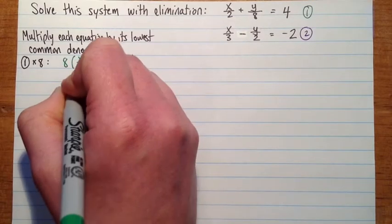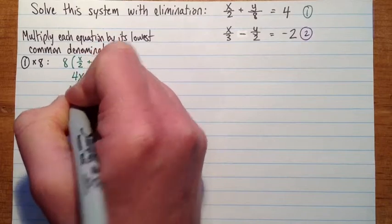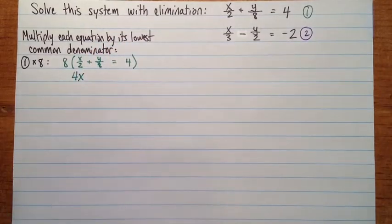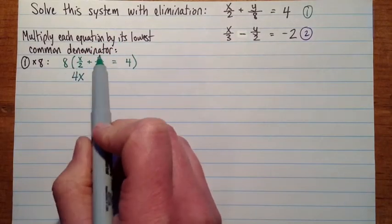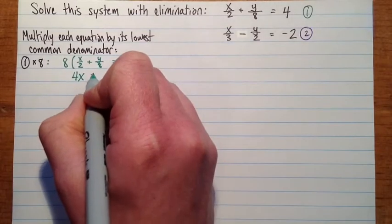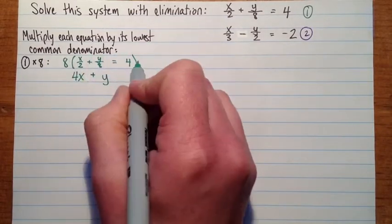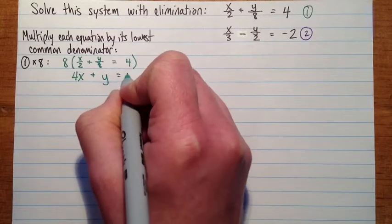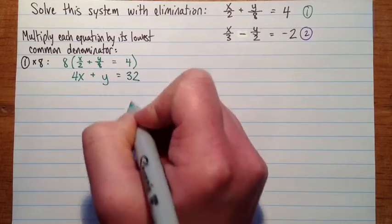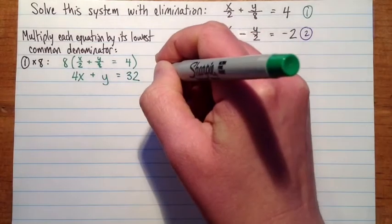And if you need to stop and write down all the steps there. And 8y divided by 8 is just 1y. And then 8 times 4 is 32. So this is going to be equation 1 prime.